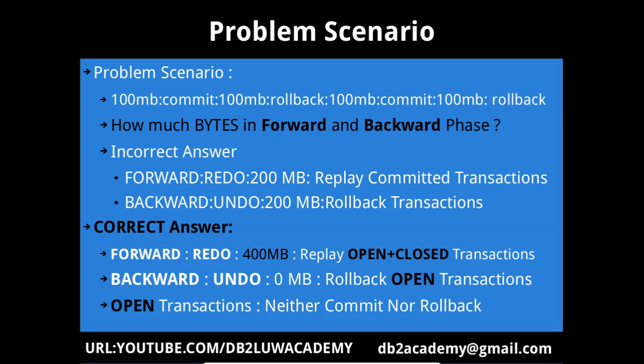This slide talks about the problem scenario and solution. We want to demystify the forward phase and backward phase of the roll forward command. The question is: if there is 100 MB of transactions and then you run a commit, again 100 MB of transactions and a rollback, again 100 MB and a commit, again 100 MB and a rollback — how many bytes are you going to see in the forward phase and how many in the backward phase? If you can answer this correctly, you have a good understanding of what the forward/redo phase and backward/undo phase are doing.